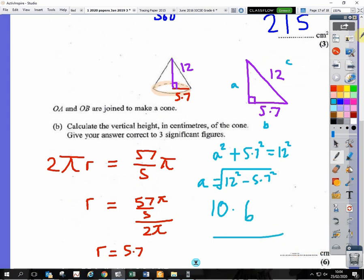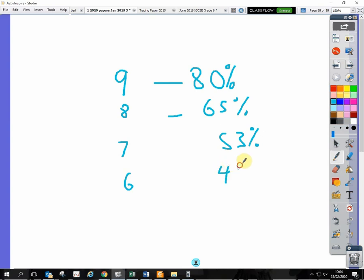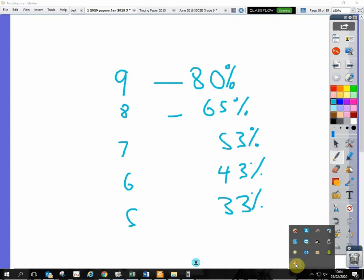Now if you want rough grade boundaries for this paper, a grade 9 is around about 80%. A grade 8 is about 65%. Seven, 53%. Six, 43%. Five, 33%, and we shouldn't be aiming for any lower than that. That's great. Thank you very much.